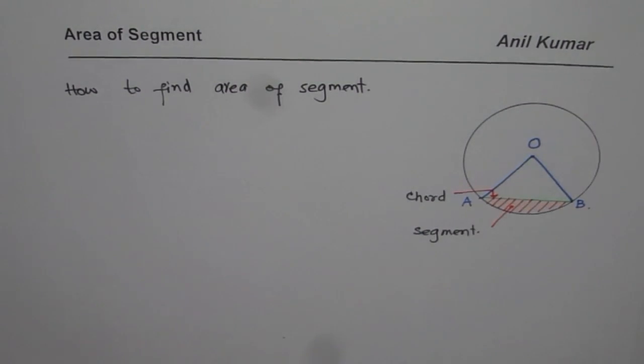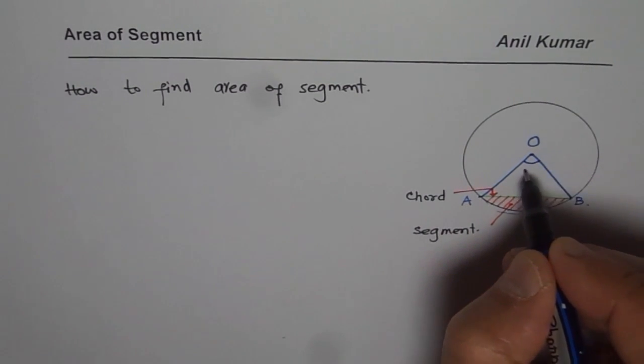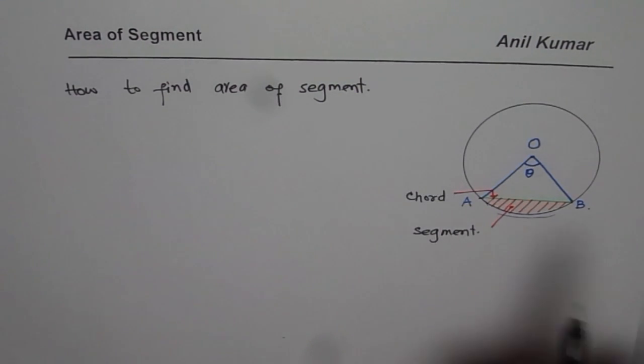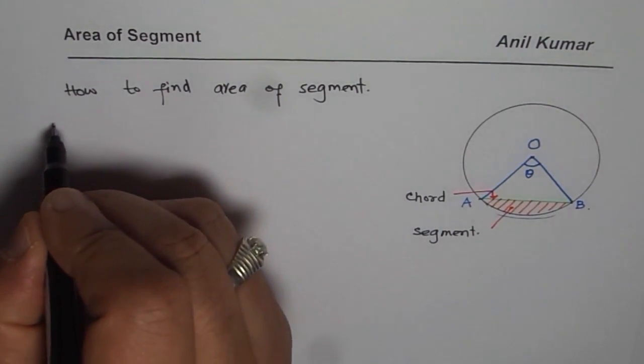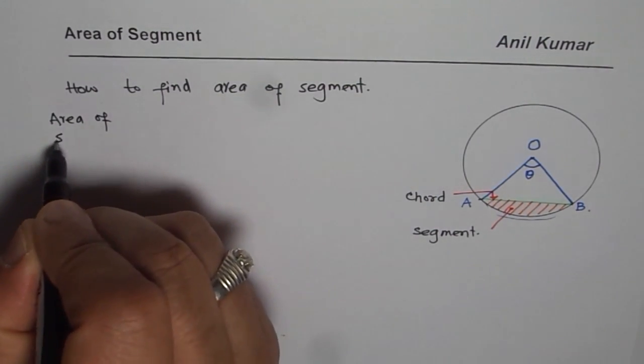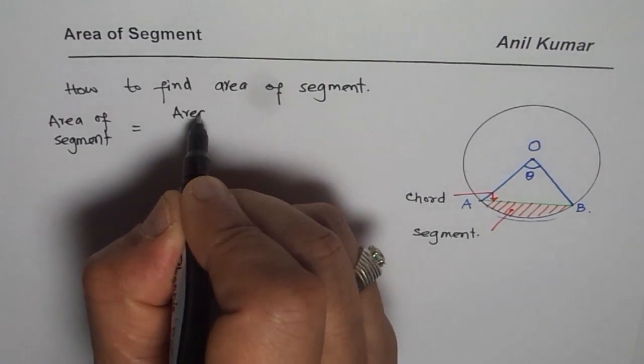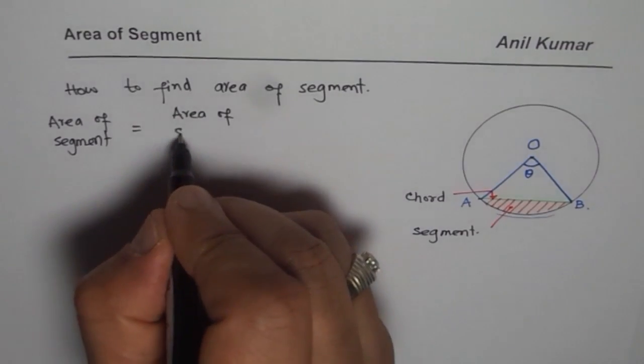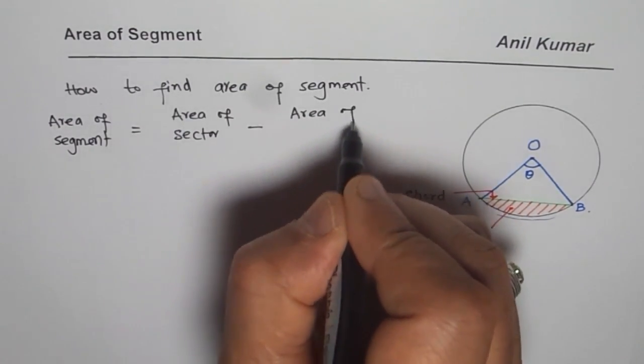So in this particular case, I get two things: I get a sector and let us say this angle is given to us as theta. So in that case, what I can say is that the area of segment should be equal to area of the whole sector, take away area of triangle.